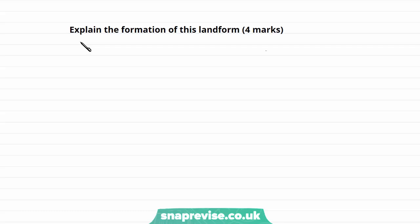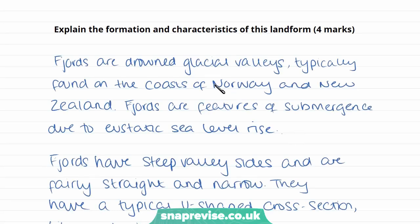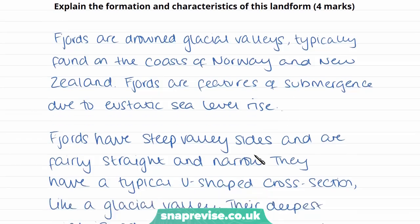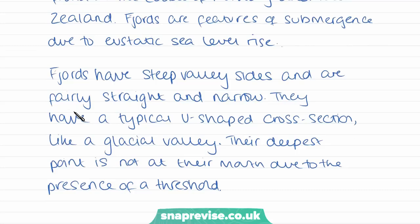The next part of the question asks us to explain the formation of this landform. First, define the landform: fjords are drowned glacial valleys typically found on the coast of Norway and New Zealand — always good to give an example. Fjords are features of submergence due to eustatic sea level rise, showing you understand they are formed from sea level rise. This is only a four-mark question, so not much detail is needed. We then describe: fjords have steep valley sides and are fairly straight and narrow, with a typical U-shaped cross-section like a glacial valley. Their deepest point is not at their mouth due to the presence of a threshold.